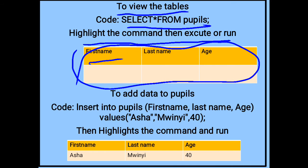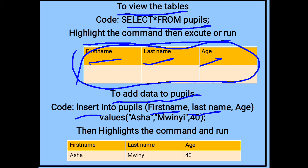The output means you have first name, last name, and age as attributes or fields. To add data to the pupils table after creating it, you are able to add data or records using query language — that is, by using a command. The command used to add data or records to the table is as follows: INSERT INTO pupils with the attributes first name, last name, and age.